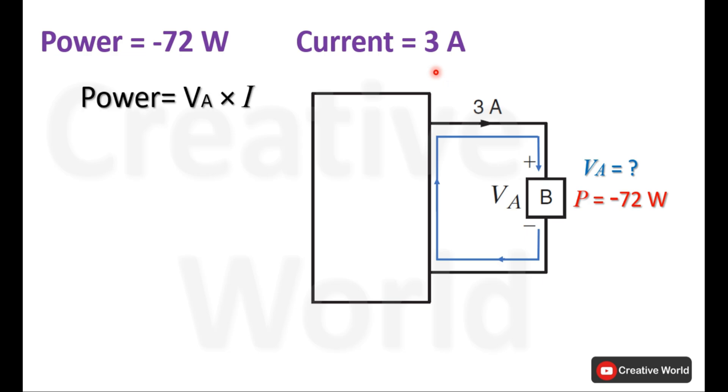Using the power formula: Power = VA × I. Entering the values: -72 = VA × 3. Dividing both sides by 3...